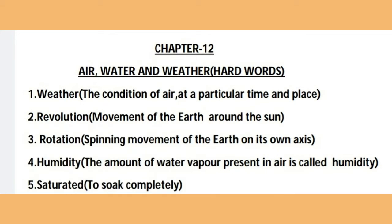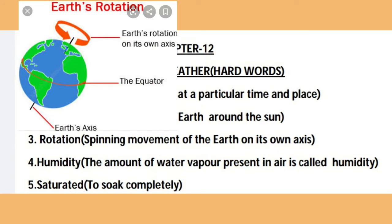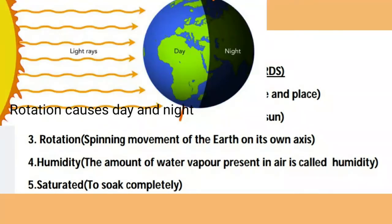The next hard word is 'rotation', spelled R-O-T-A-T-I-O-N. Rotation means the movement of the Earth on its own axis. Rotation causes day and night. One rotation is completed in one day, which equals 24 hours.